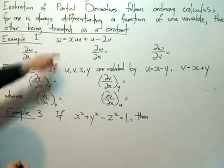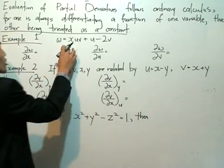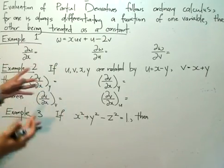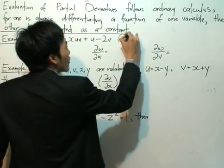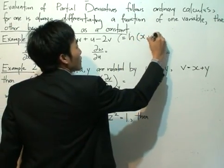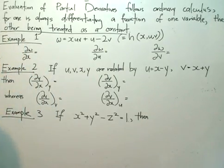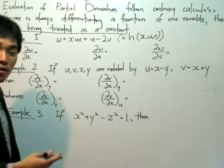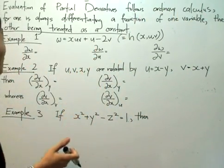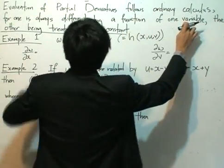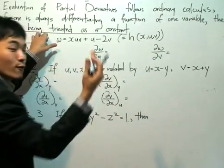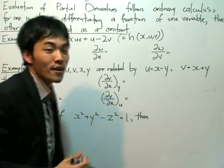Example number one: we have the function w equals x·u·v plus u minus 2v. Let's call this function h, and it's in terms of x, u, and v. So we have a function of three variables x, u, and v, and we want to take the partial derivatives. As stated, we can only differentiate by treating the function as a function of one variable, with the others as constants. So I pick one variable to differentiate with respect to, and treat the other two as constants.